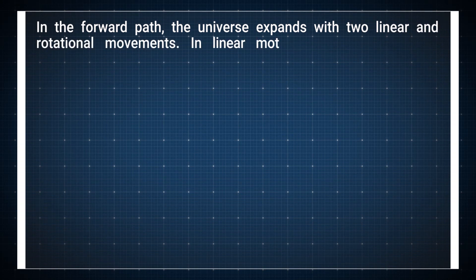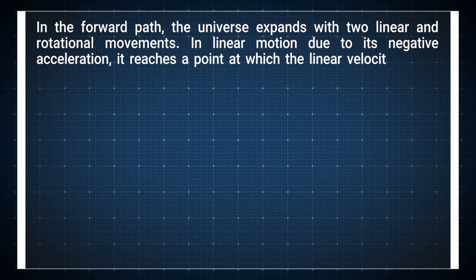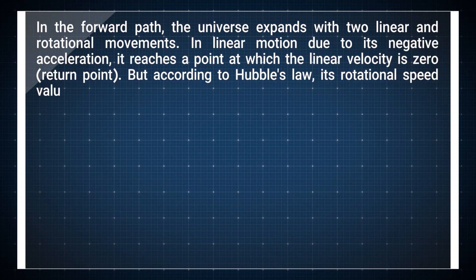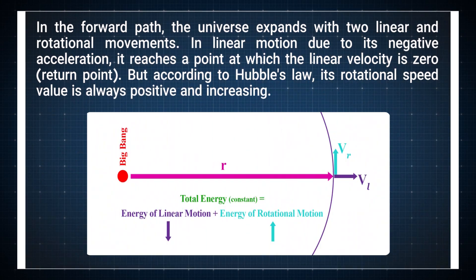In the forward path, the universe expands with two linear and rotational movements. In linear motion, due to its negative acceleration, it reaches a point at which the linear velocity is zero (return point). But according to Hubble's law, its rotational speed value is always positive and increasing.